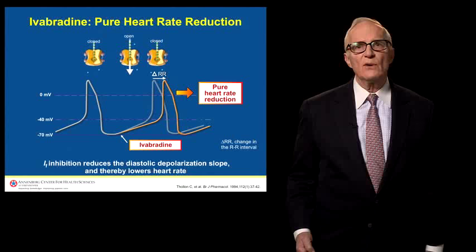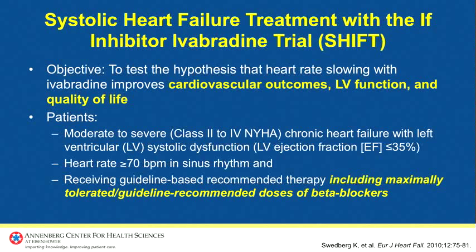The impact of Ivabradine on outcomes in patients with systolic heart failure was assessed in the Systolic Heart Failure Treatment with the IF Inhibitor Ivabradine trial, or SHIFT. The objective of SHIFT was to test the hypothesis that heart rate slowing with Ivabradine improves cardiovascular outcomes, left ventricular function, and quality of life. The patients included were those with moderate to severe chronic heart failure, New York Heart Association functional classes two through four, with left ventricular systolic dysfunction as indicated by ejection fraction ≤35%, who had a heart rate of at least 70 beats per minute in sinus rhythm, and were receiving guidelines-based recommended therapy including maximally tolerated guideline-recommended doses of beta blockers.